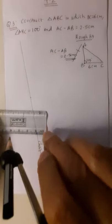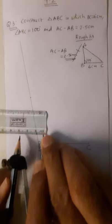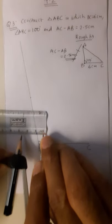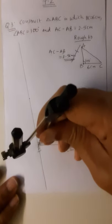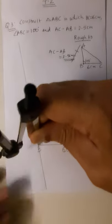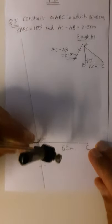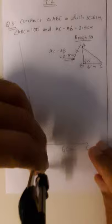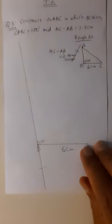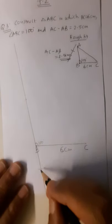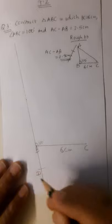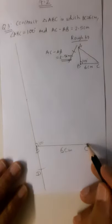I will keep the compass at 0 and 2.5 centimeter, taking the measurement accurately. From vertex B I will cut an arc of 2.5 centimeter downward, below the base BC. There I will mark point D. Then I will join D with C, so I am getting segment DC.